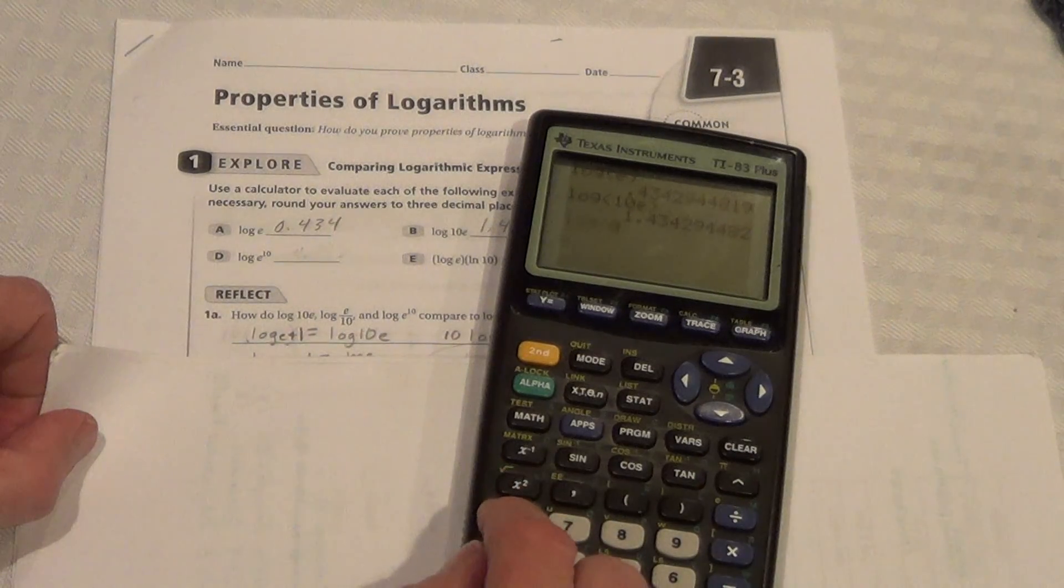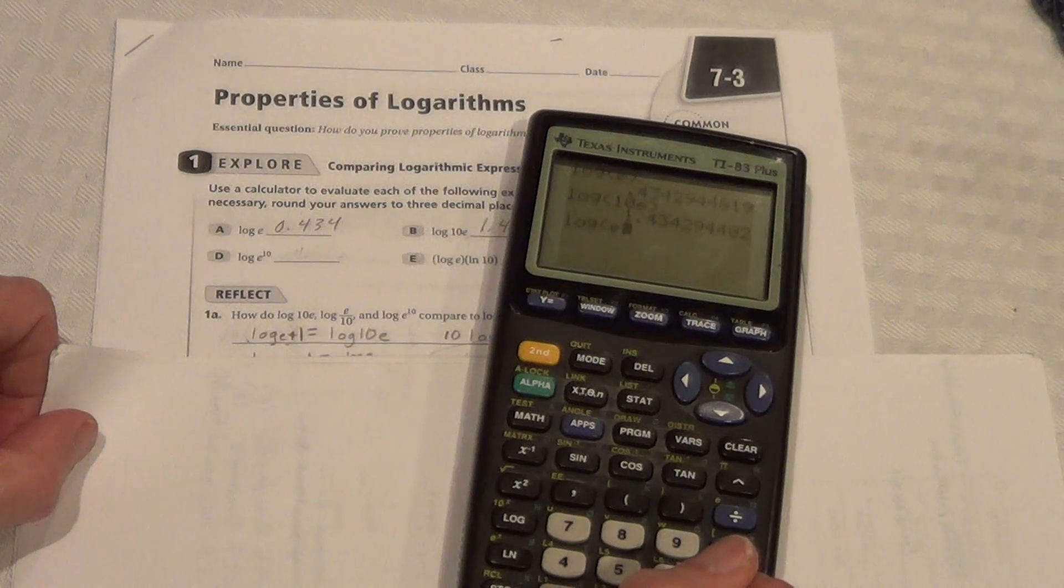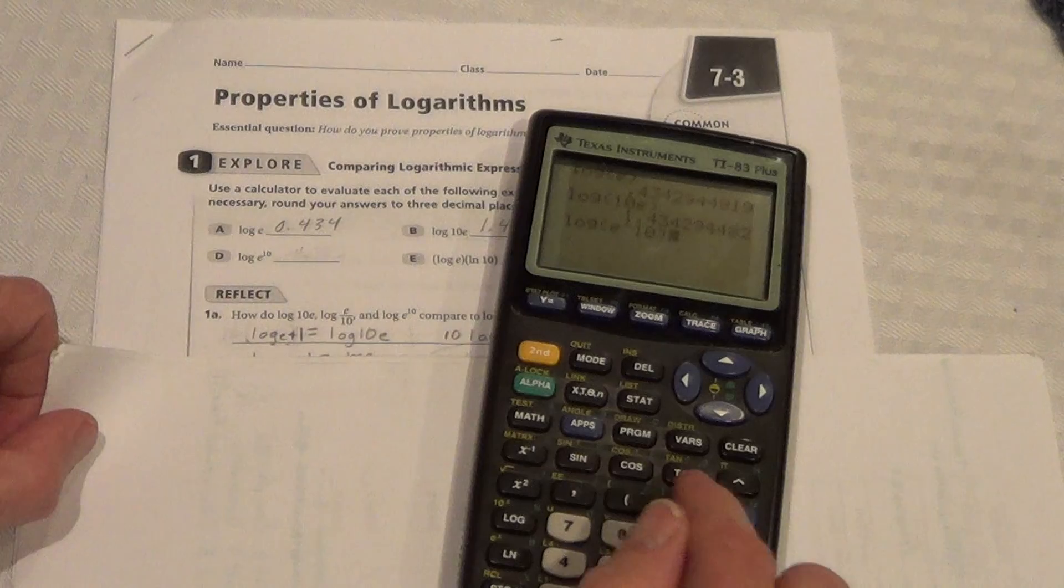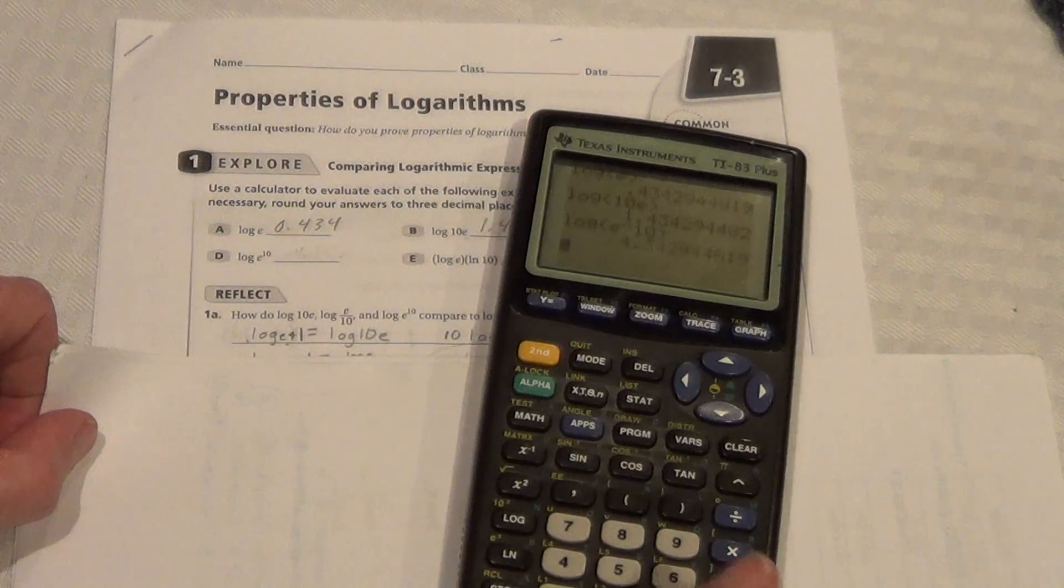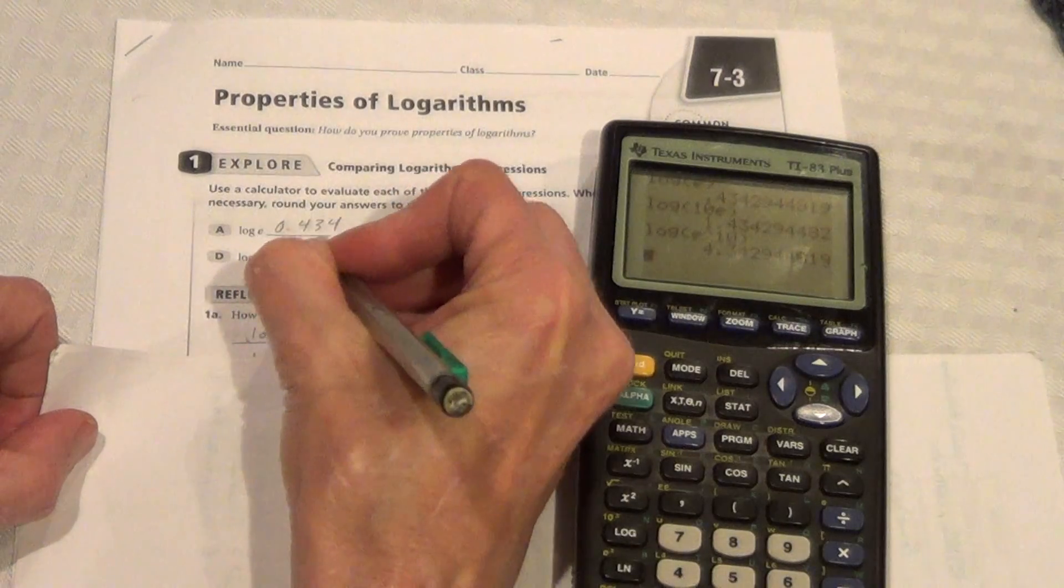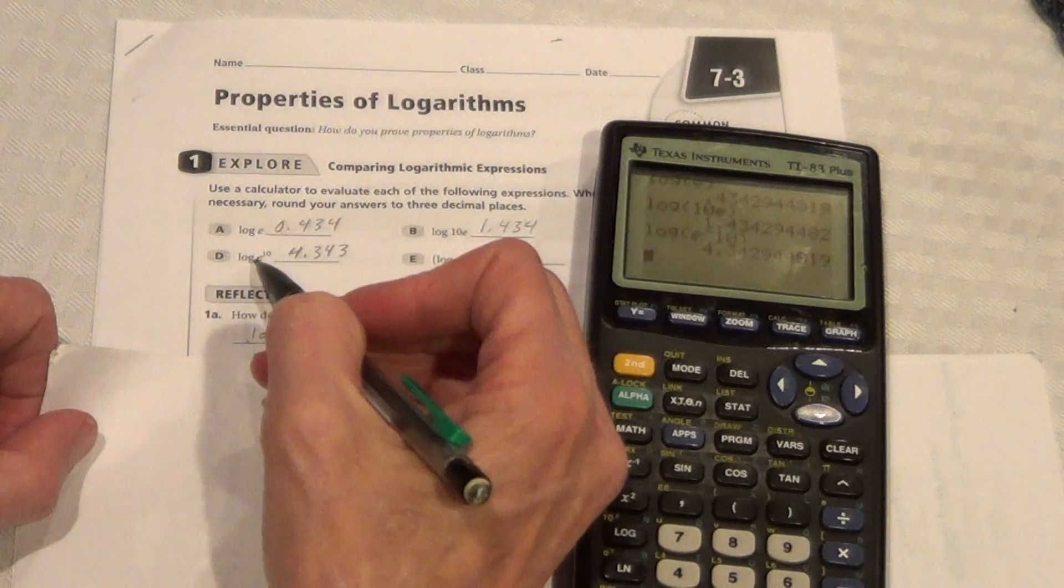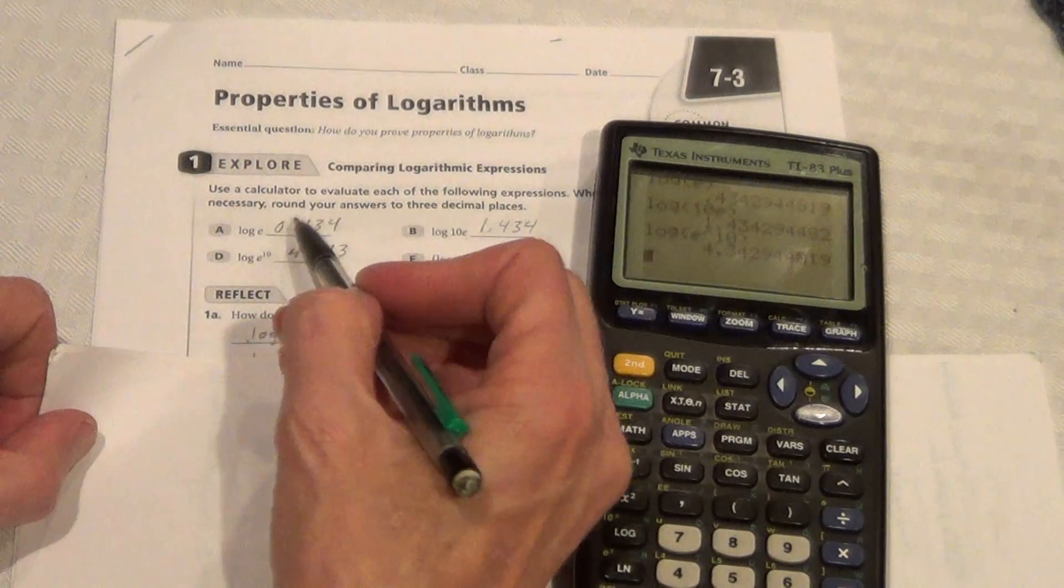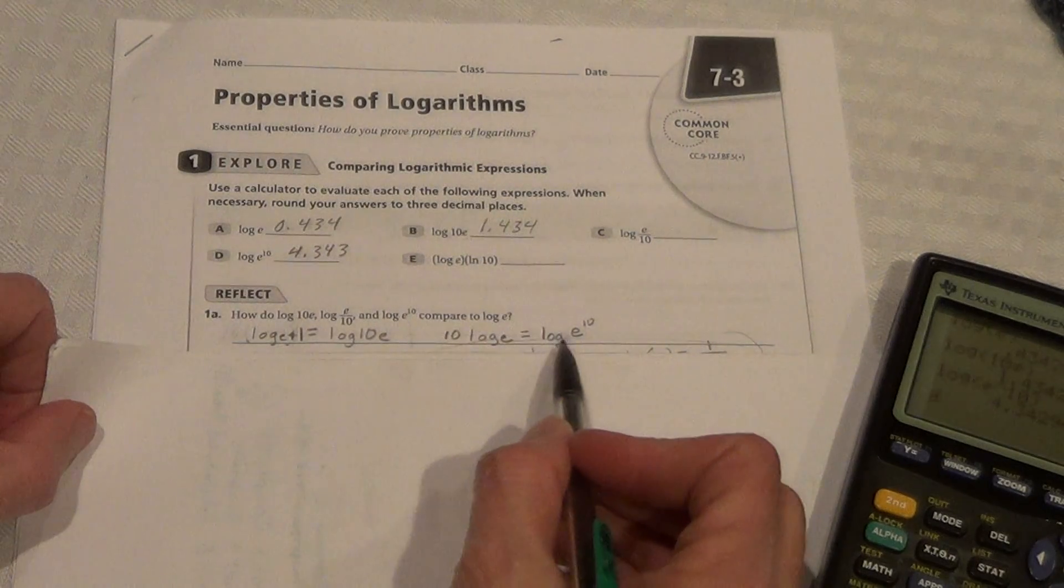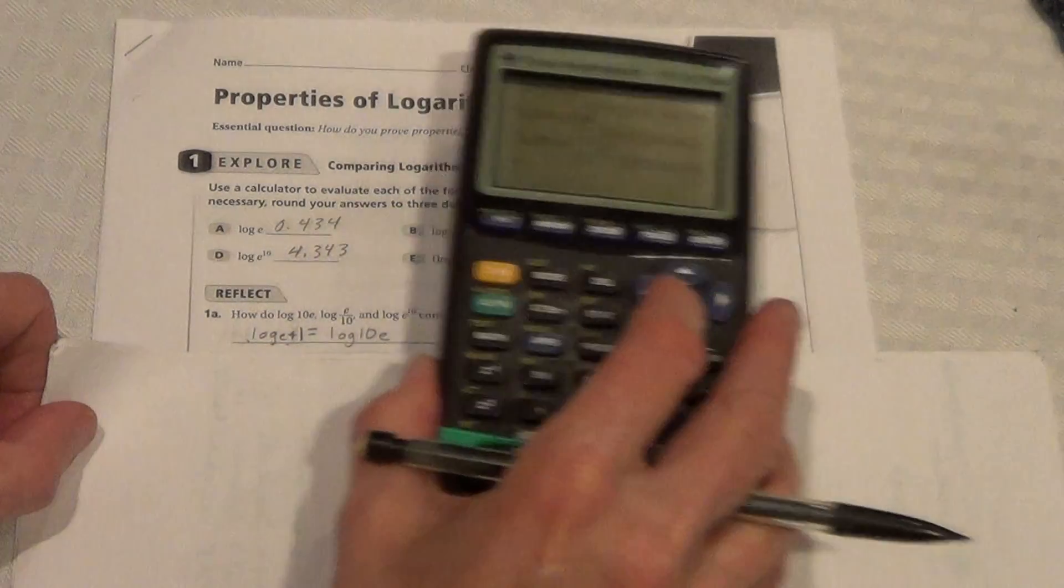Now we go log e raised to the 10, enter, and we get 4.343. So we can see that log e raised to the 10 is 10 times log e. So, 10 times log e equals log e to the 10th.